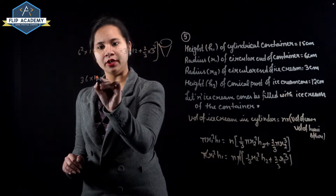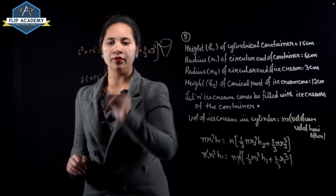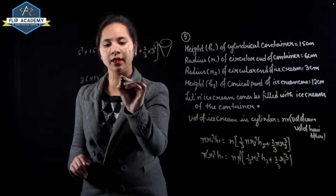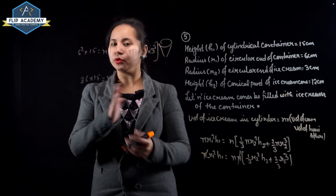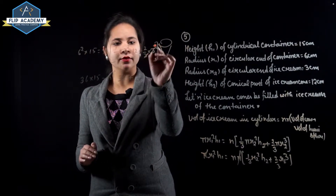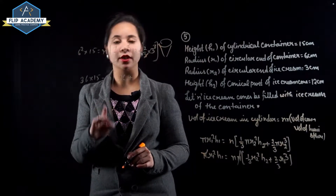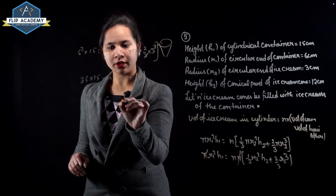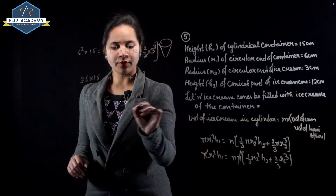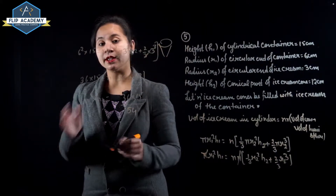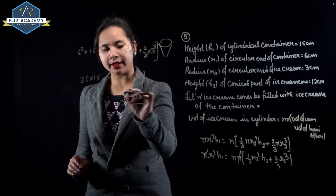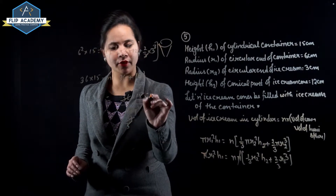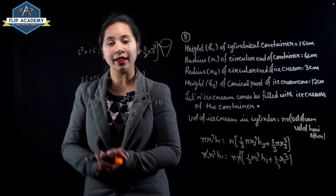So 36 × 15 = n × 54. Therefore n = (36 × 15) / 54. Dividing by 6: n = (6 × 15) / 9 = 10.